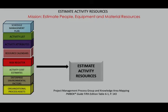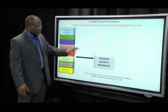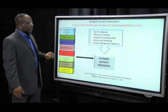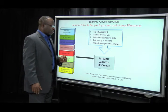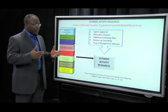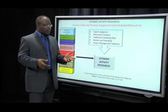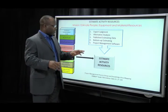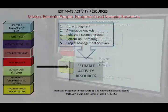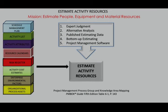We've also got EEFs and OPAs. Looking at our tools and techniques, we've got expert judgment, alternative analysis — looking at the different alternatives for carrying out the work. Should we use Phil or someone else who's more skilled, keeping in mind it costs more? Published estimating data looks at data routinely published by trade organizations and firms to give an idea of what it would cost for certain standard labor tasks and certain resources.